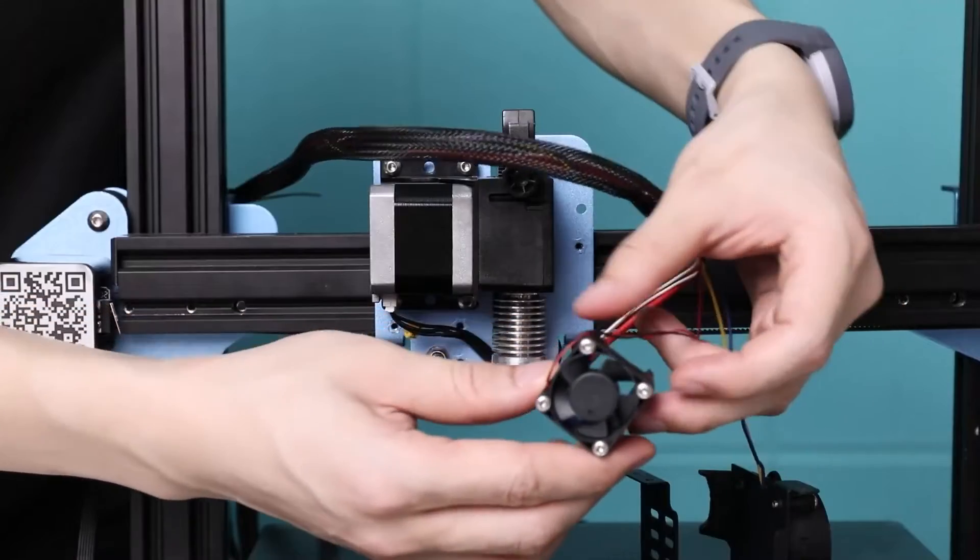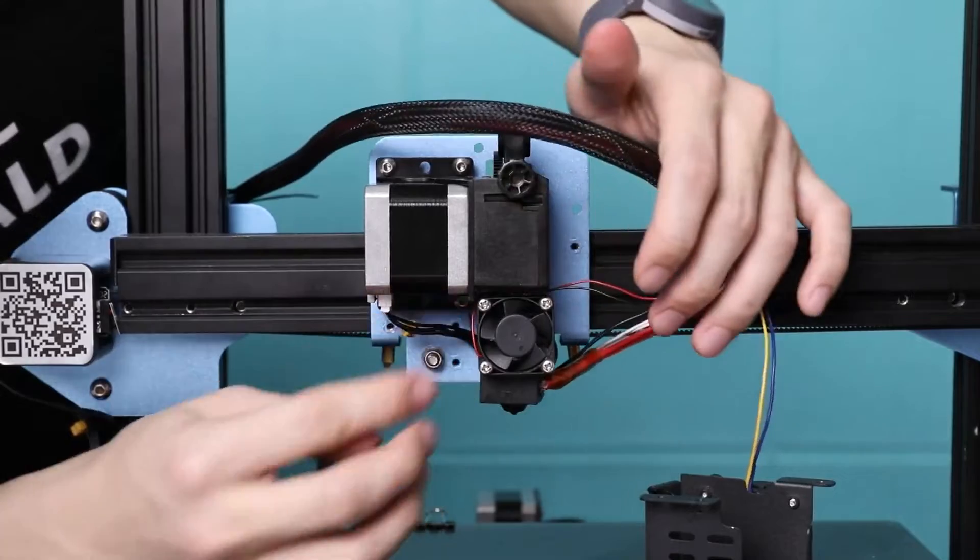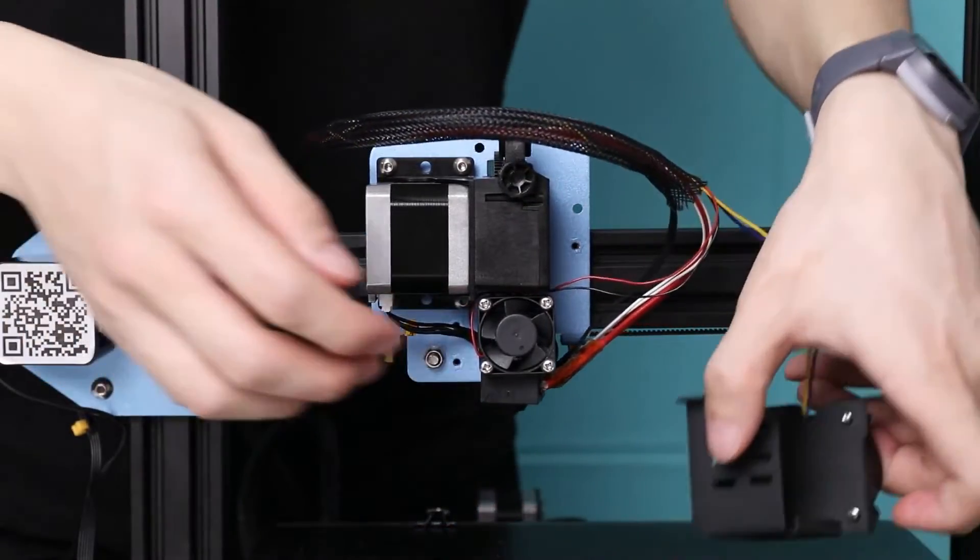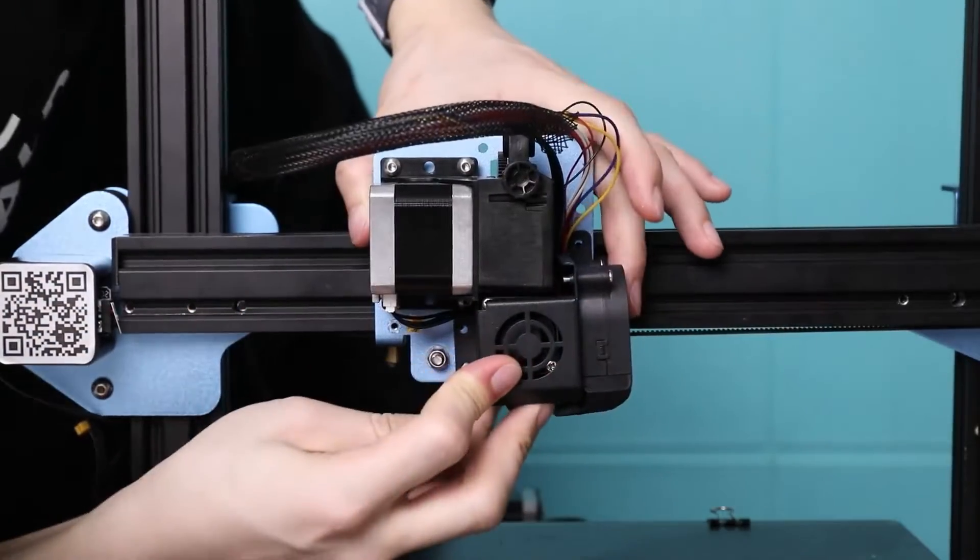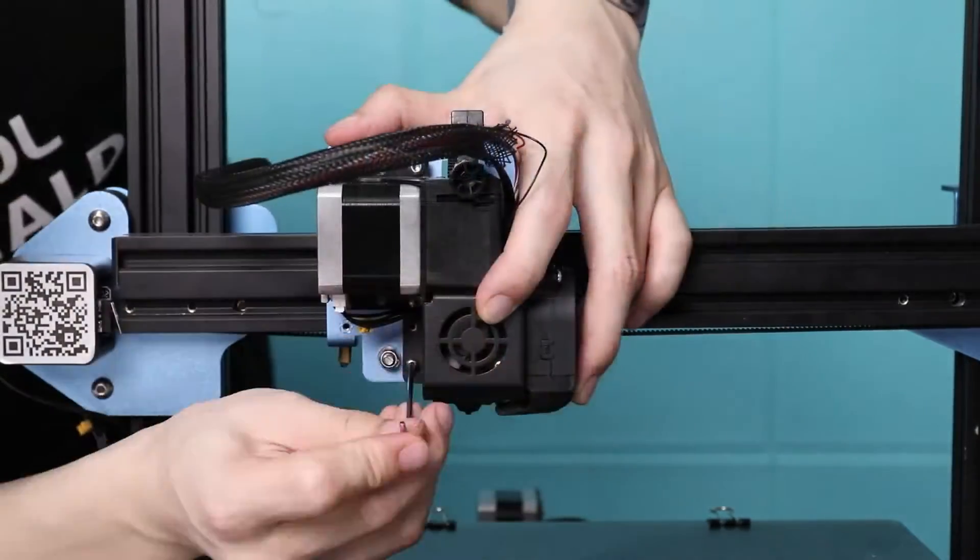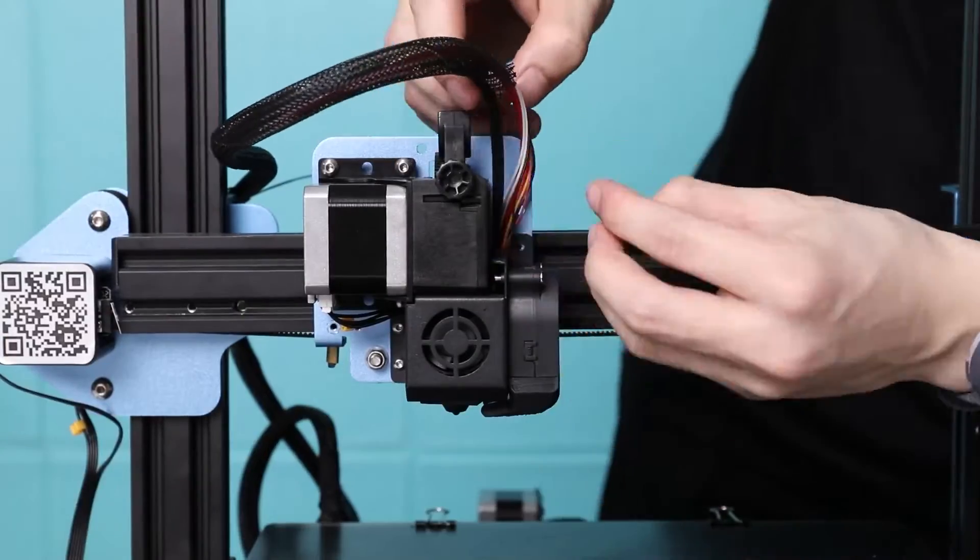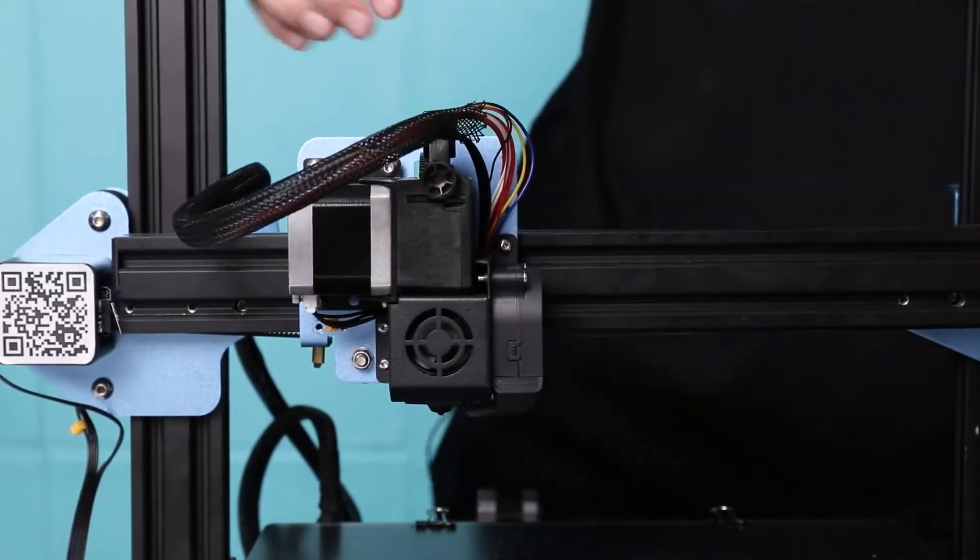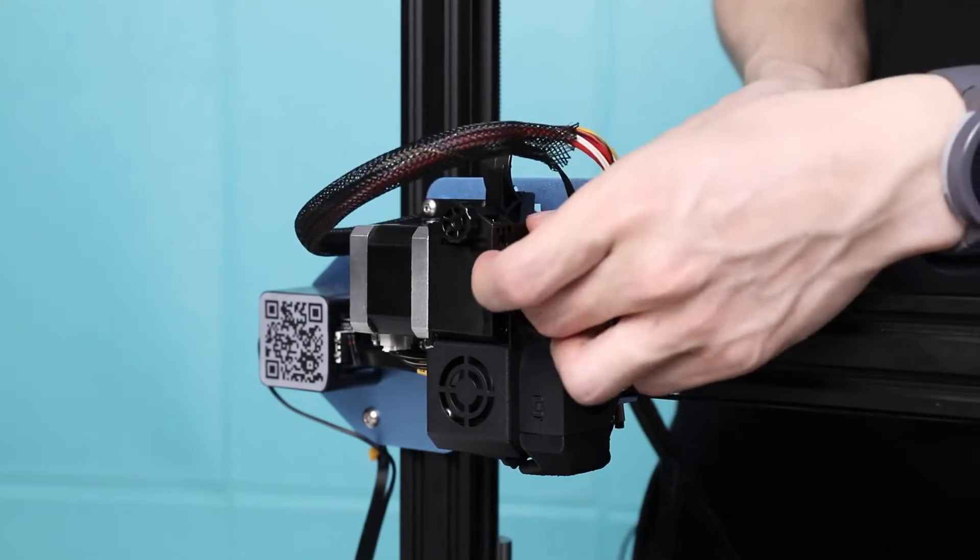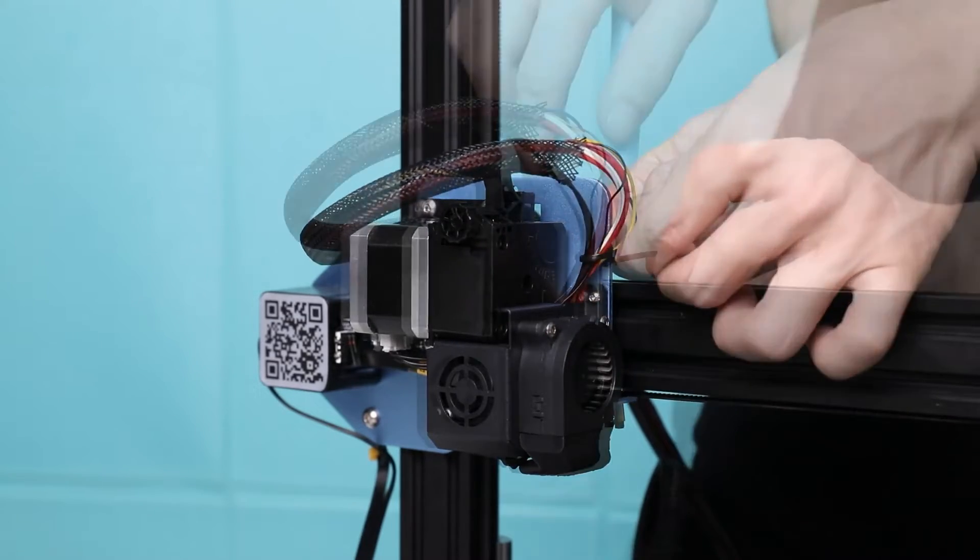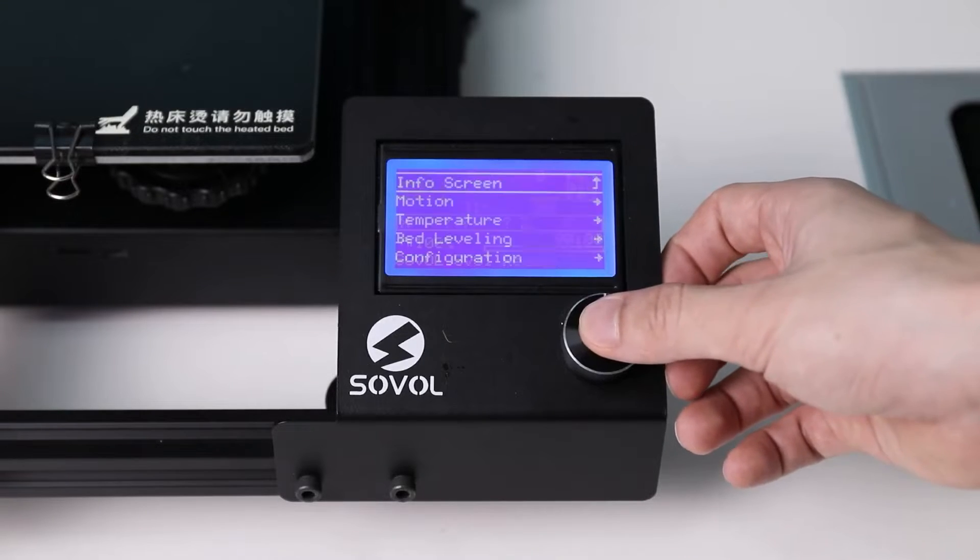Snap the cooling fan back onto the heat sink. Reinstall the hot end fan shroud using the three screws. Use a new zip tie to reattach the cable bundle to the X carriage. Use the cutter to trim the zip tie. Now let's go ahead and heat up the nozzle and feed the filament.